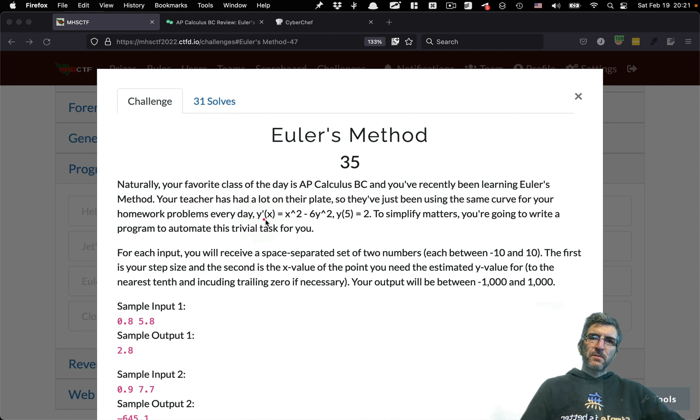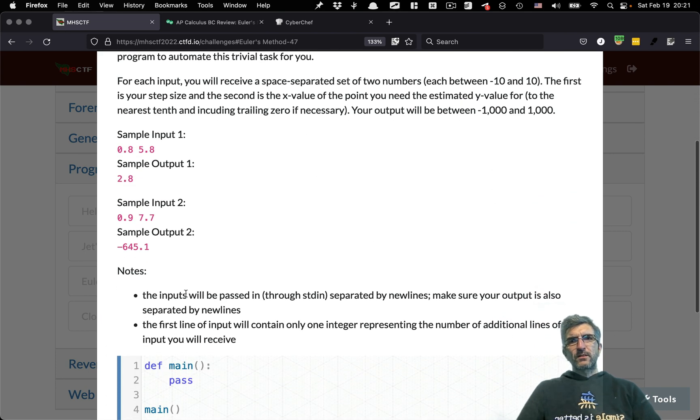The question is y' of x equals this and we have one initial value y(5) = 2. Then we have one step and one x and we want to calculate what will be the y if this should be the x. And Euler method has some step which in this case it's 0.8. If you read the question it will tell you that the input will be passed through stdin separated by newlines.